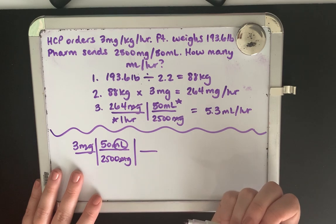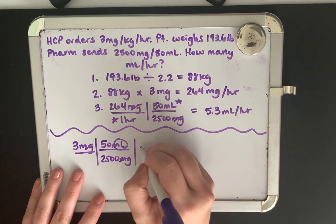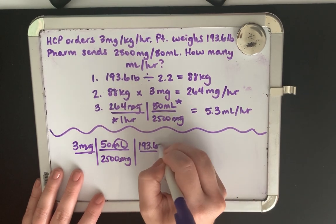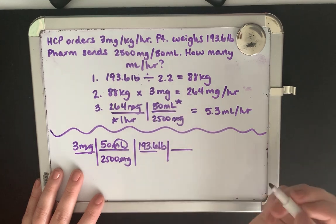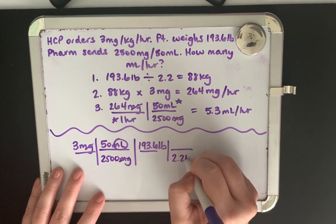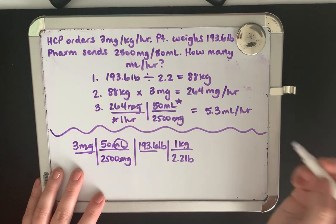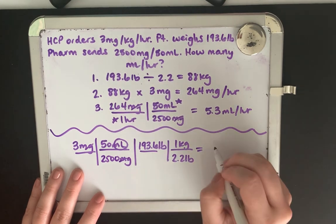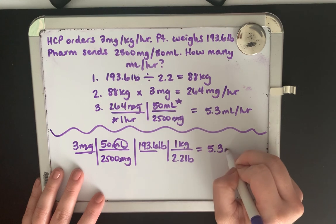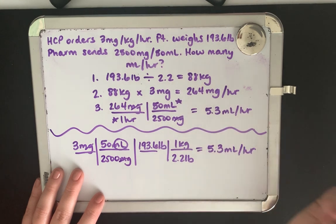So we still need to figure out our patient's weight. So we have that 193.6 pounds. We know that there's 2.2 pounds for every one kilogram. Whenever we map this out, we get the same result, 5.3 mLs per hour.